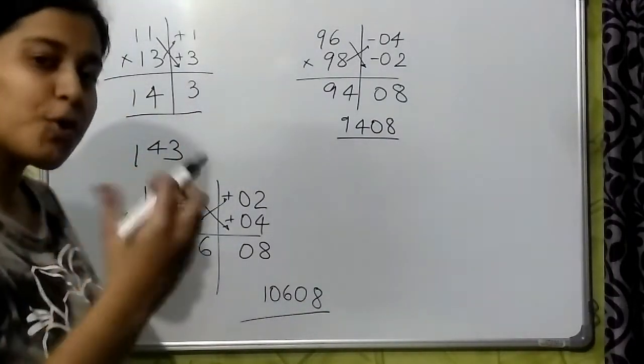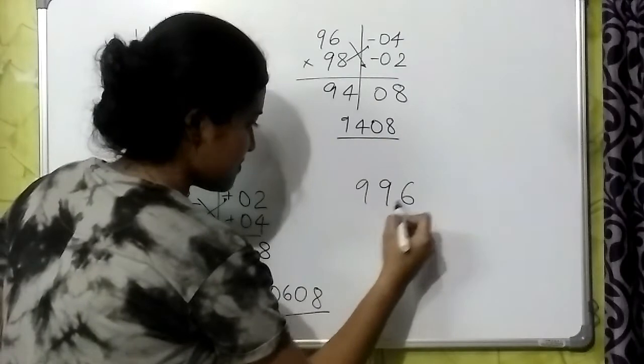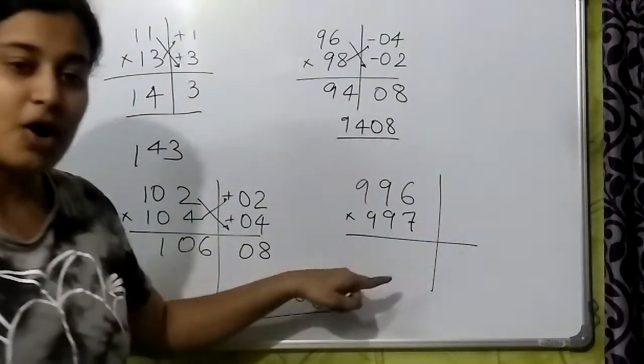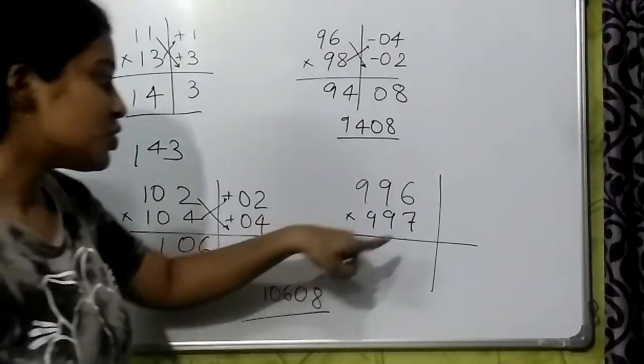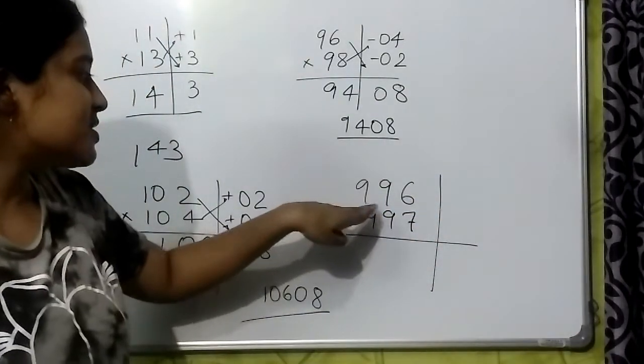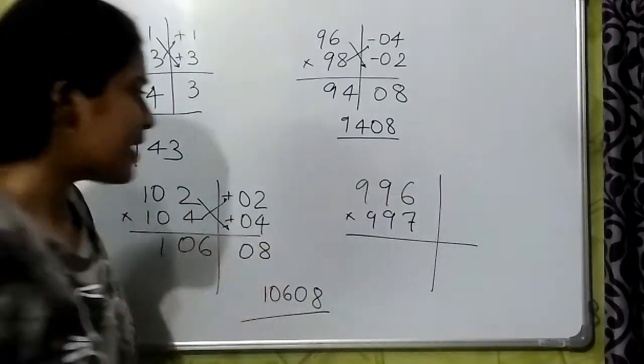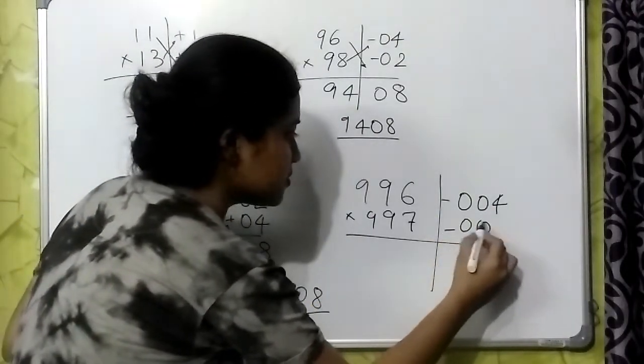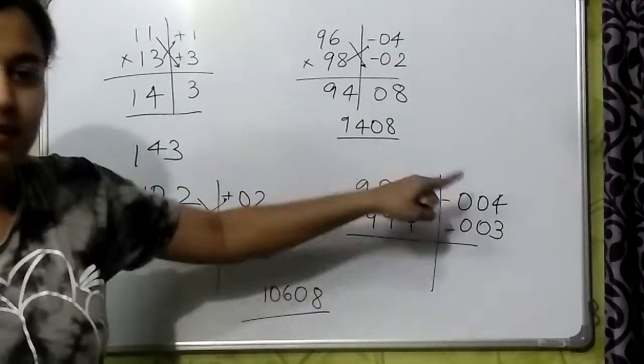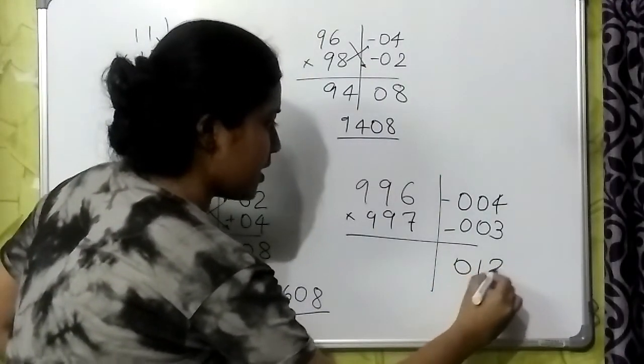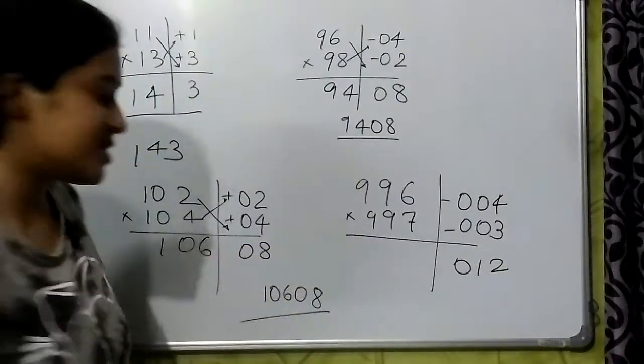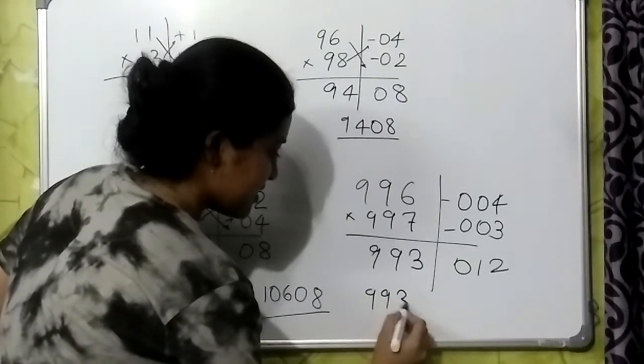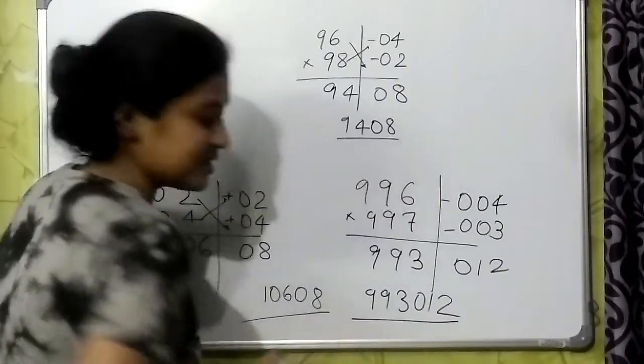Let us take more bigger numbers. Now here the base is 1000. This is 1000, this is 1000, so we will take 3 digits over here. How much does this differ from 1000? Minus 4, so minus 004. Here minus 003. Let us multiply these two numbers. 0, 1, 2. Cross addition 9, 9, 9, 3, 0, 1, 2 is the answer.